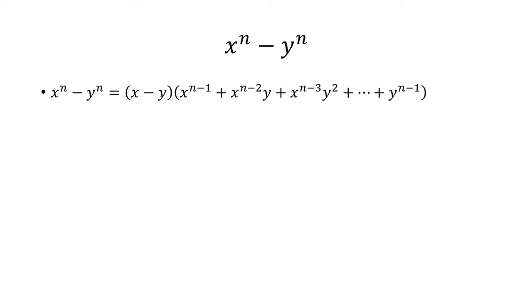You have x minus y multiplied by x to the n minus 1 plus x to the n minus 2 times y plus etc. So the way we're going to prove this is by working with the right hand side.